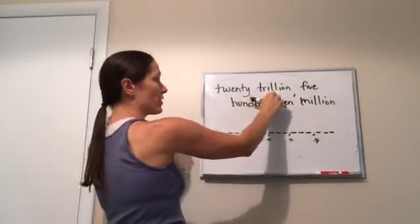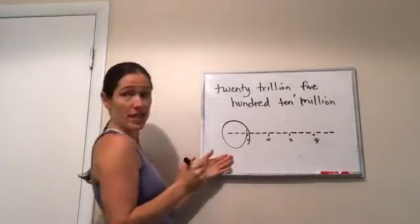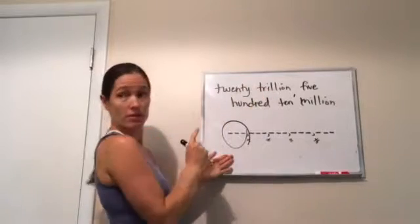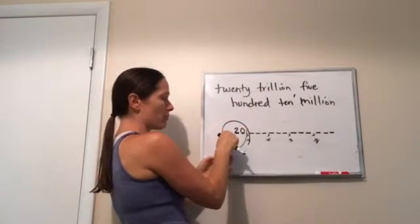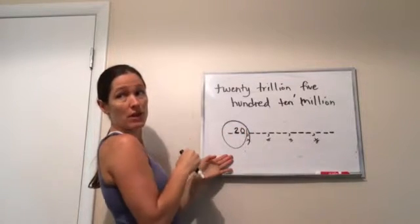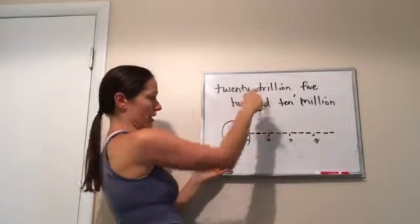Now twenty trillion. So where is my twenty going to go? In my trillion section. Twenty trillion. Got it? So I'm going to put my twenty in there. Now why did I not put two zero and just fill in the zero? Because that would be two hundred trillion. Yeah. And we want it to be twenty trillion.